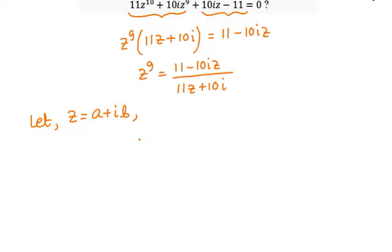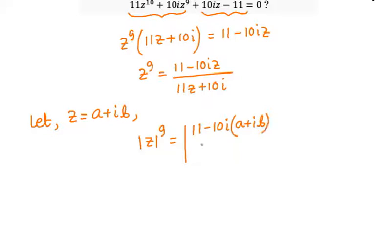Taking modulus on both sides, modulus of z to the power 9 equals modulus of 11 minus 10 iota times (a plus ib) — replacing z on the RHS — divided by 11 times (a plus ib) plus 10 iota.